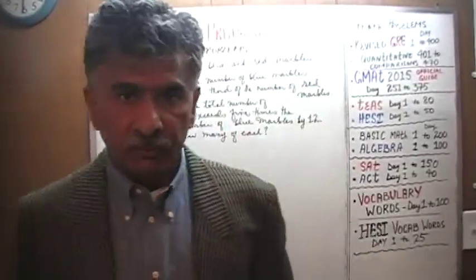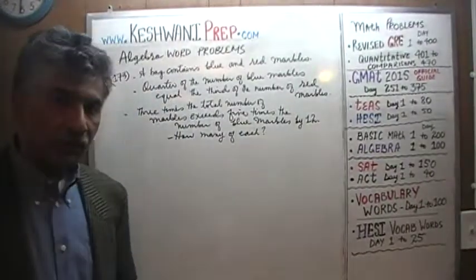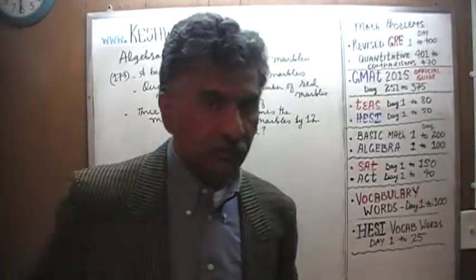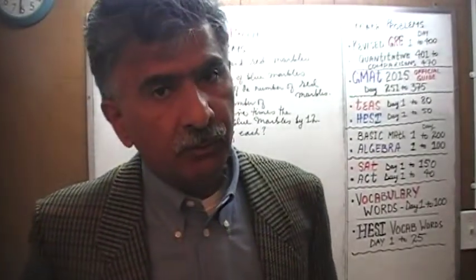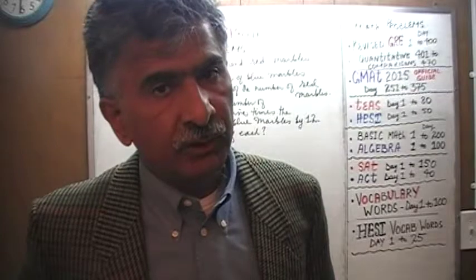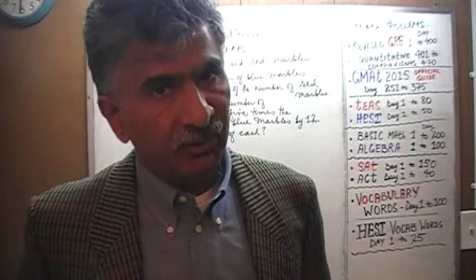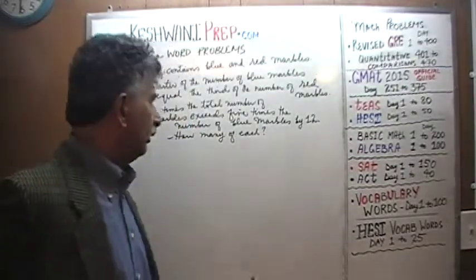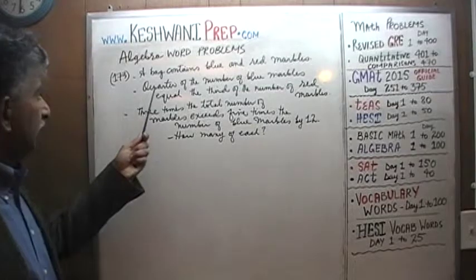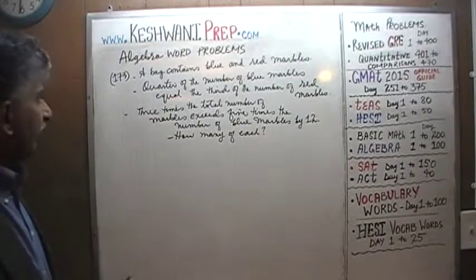Let's find out. We are looking for two unknowns: the number of blue marbles and the number of red marbles. Two unknowns means we need two independent equations, and those two equations are going to come from the two sentences that you see here.